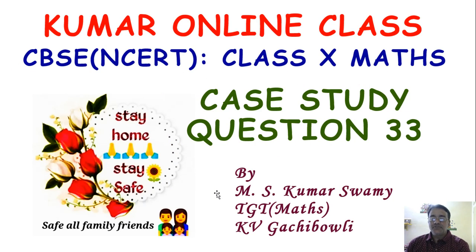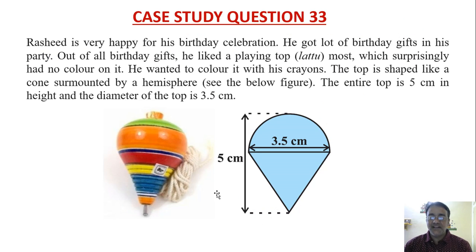Now we are going to start case study question number 33, and this case study is based on mensuration, surface areas and volumes. I have modified the textbook example. Rasheed is very happy for his birthday celebration. He got a lot of birthday gifts in his party. Out of all birthday gifts, he liked a playing top (lattu) most, which surprisingly had no color on it. He wanted to color it with his crayons. The top is shaped like a cone surmounted by a hemisphere. The entire top is 5 centimeters in height and the diameter of the top is 3.5 centimeters.